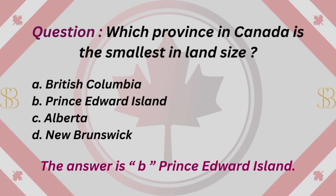Question: Which province in Canada is the smallest in land size? A. British Columbia. B. Prince Edward Island. C. Alberta. D. New Brunswick. The answer is B. Prince Edward Island.